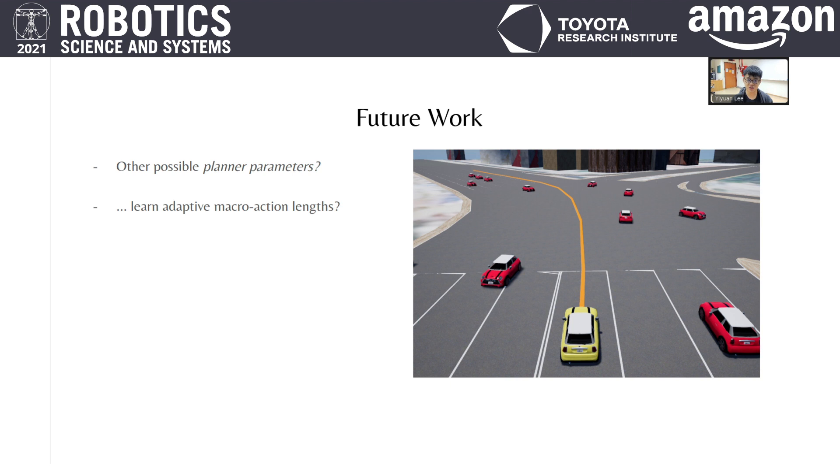We can also learn attention over other cars, at each step ignoring irrelevant cars completely to simplify planning. The possibilities are huge, and the architecture of MAGIC is certainly easily adaptable to them.